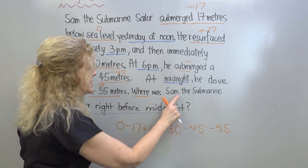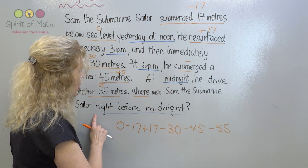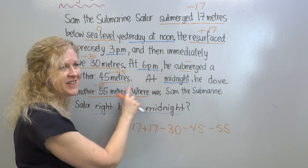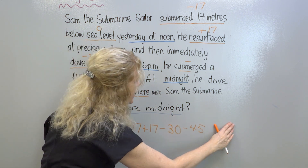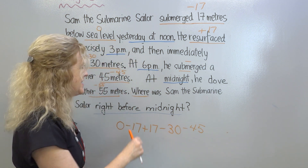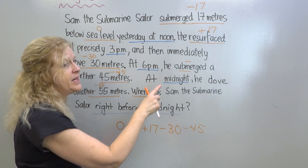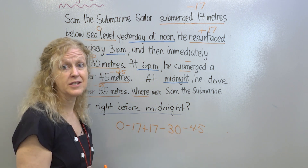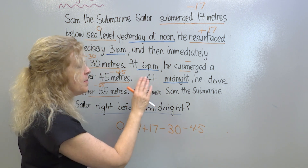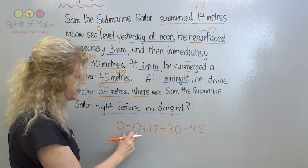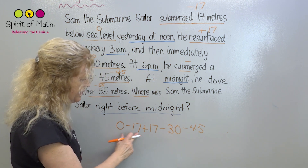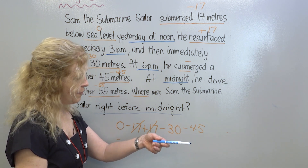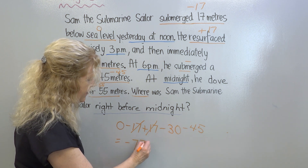The question says: where was Sam the submarine sailor right before midnight? At midnight he went down here, so we're not going to use that — that is a red herring. Because it says right before midnight. At midnight he dove, but before that he would have been wherever he was at that time. So before midnight, he had 17 minus 17, which is zero — he submerged and came back up — then went down 30 and another 45, which gives you negative 75 meters.